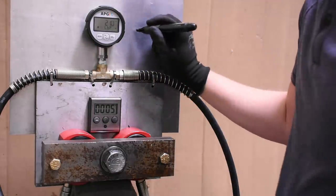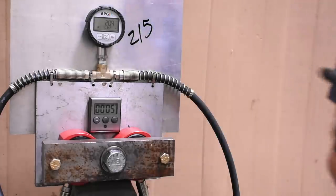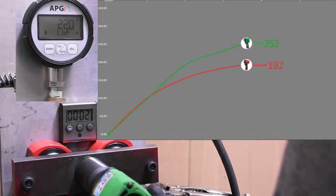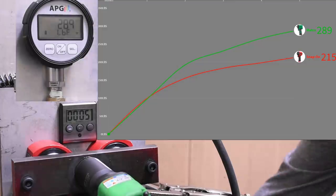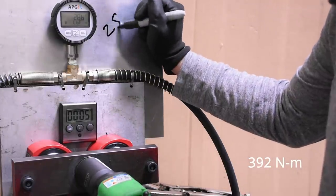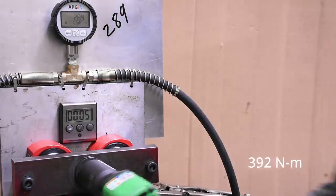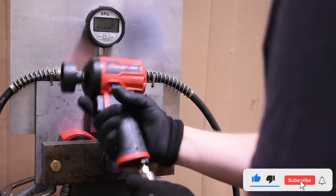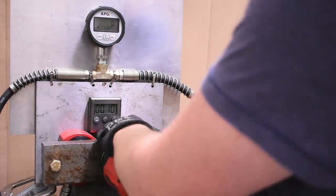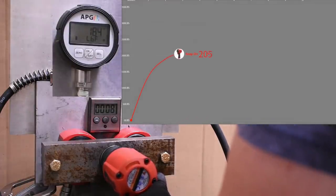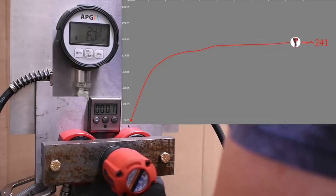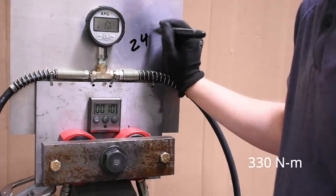Next up is the Matco MT2765. 289 - that's a new compact impact record! Very nice. Next up is reverse, where most of these impacts live their life. This is our 10-second max torque test, 10 seconds in reverse. Here's the Snap-on.